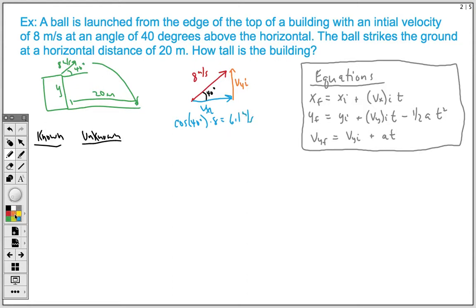To solve for our y component here, we're going to use the sine function. So it would be sine of 40 times our magnitude, which is 8. And so that's going to give us a vertical velocity of 5.1 meters per second. So when I have an angle type problem, I go straight to the vector. I find my x and y component. And that's where I begin what I know and what I don't know.